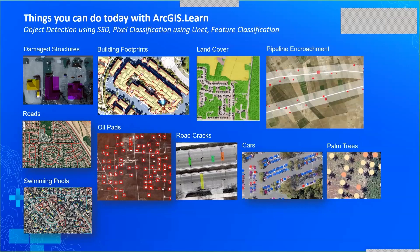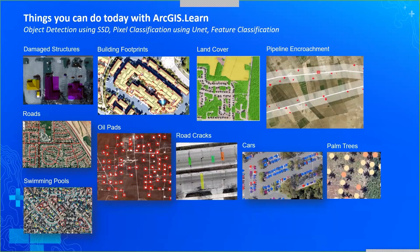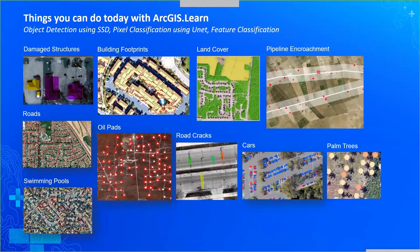To summarize some use cases for using deep learning and notebooks together: identifying damaged structures and building footprints using instance segmentation models, land cover classification using pixel classification, and object detection, among others.